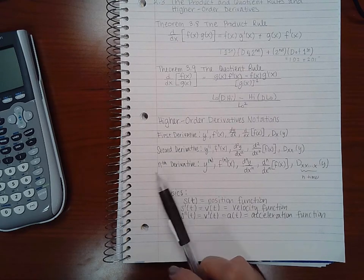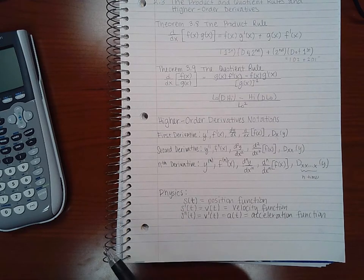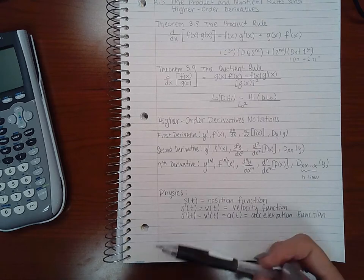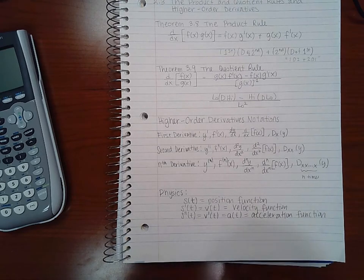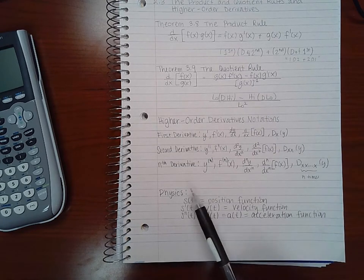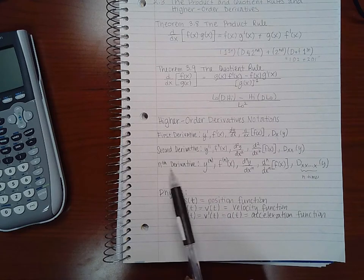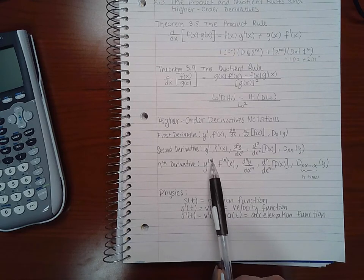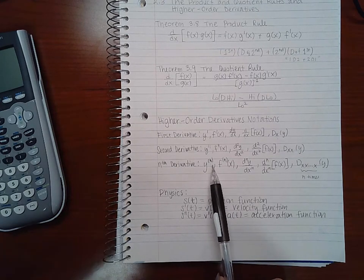The nth derivative. So beyond the first and the second, you could have the third derivative, the fifth derivative, the sixth derivative, the seventh derivative, so on and so forth. So whatever derivative you're taking, you could put that number here in parentheses instead of drawing a bunch of primes.